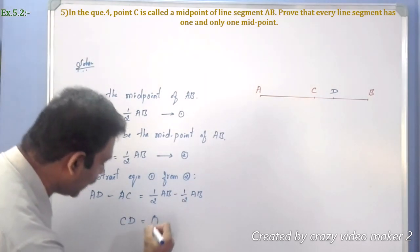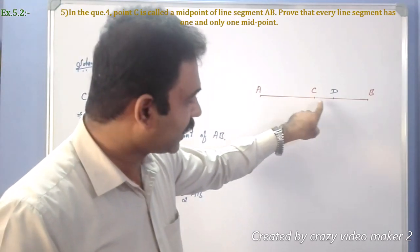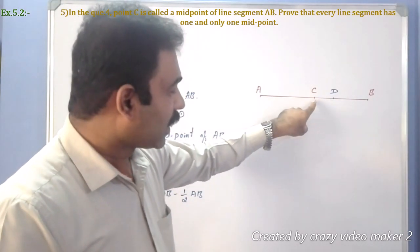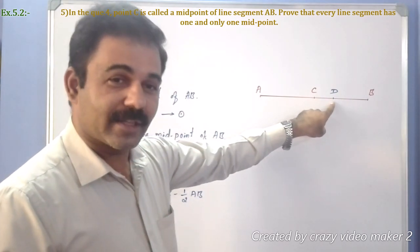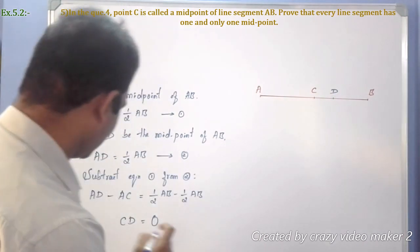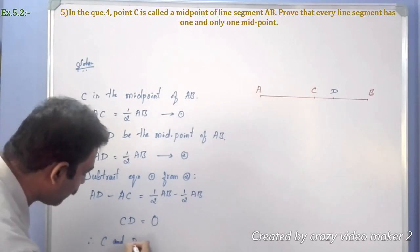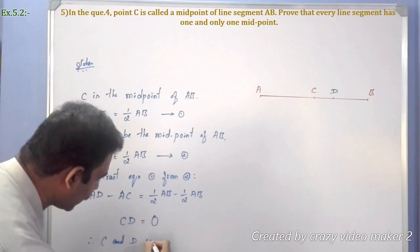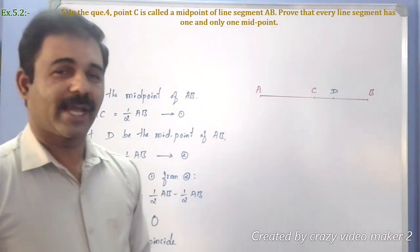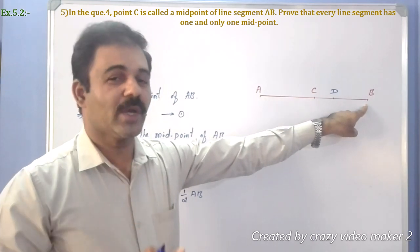CD equals half of AB minus half of AB, which becomes 0. That means CD equals 0. The distance between C and D becomes 0 only when C and D coincide. Therefore, C and D coincide, proving that every line segment has one and only one midpoint.